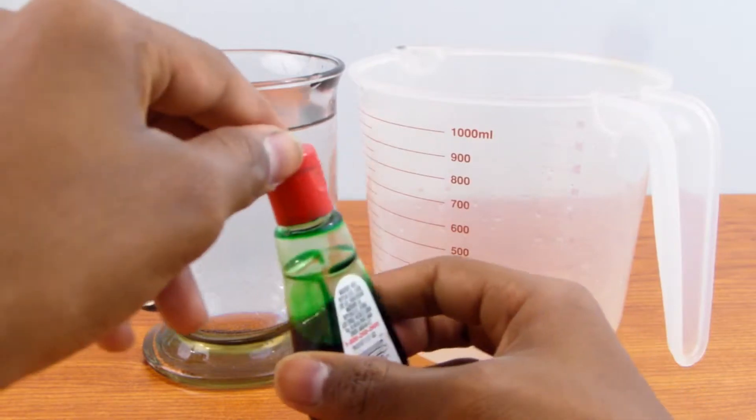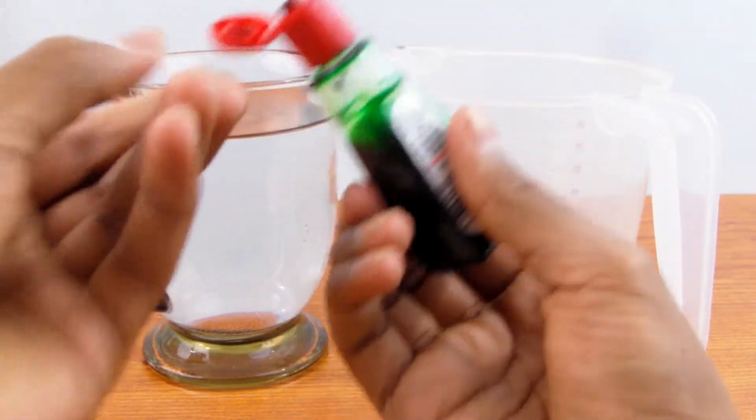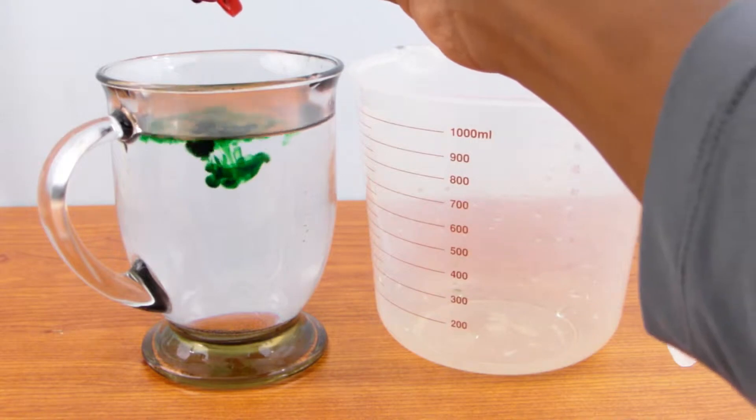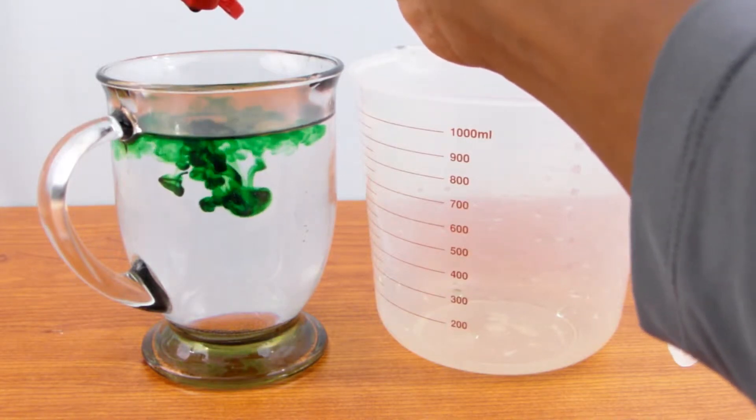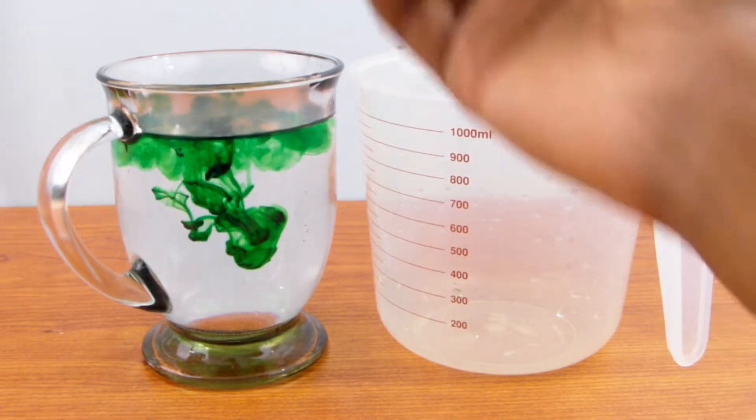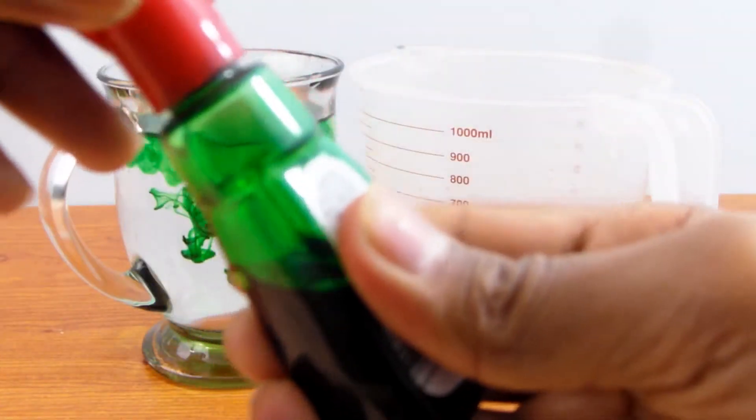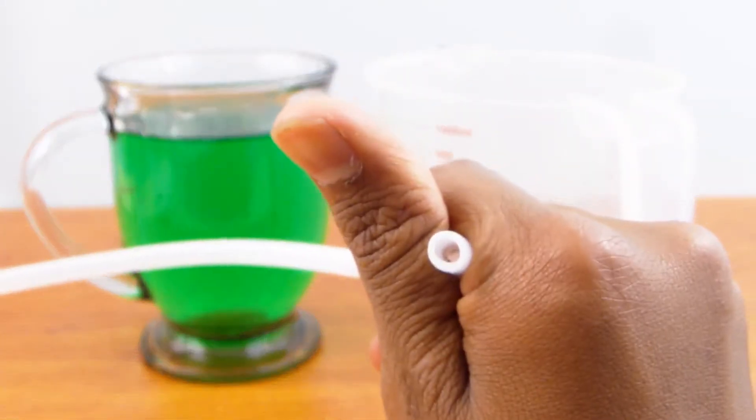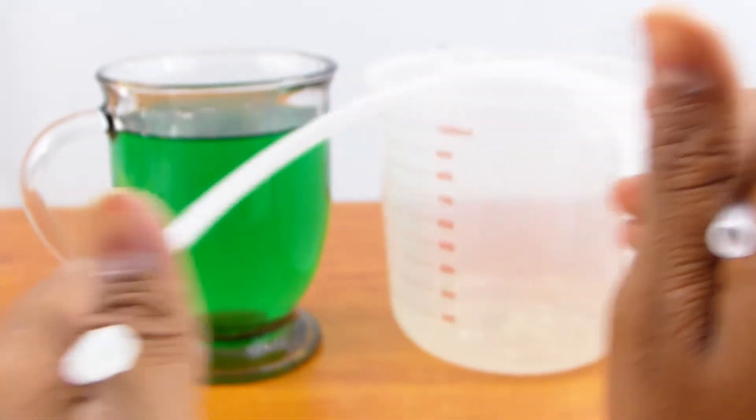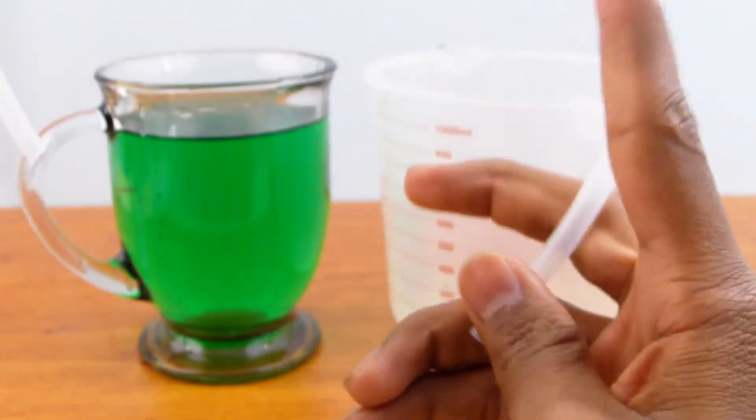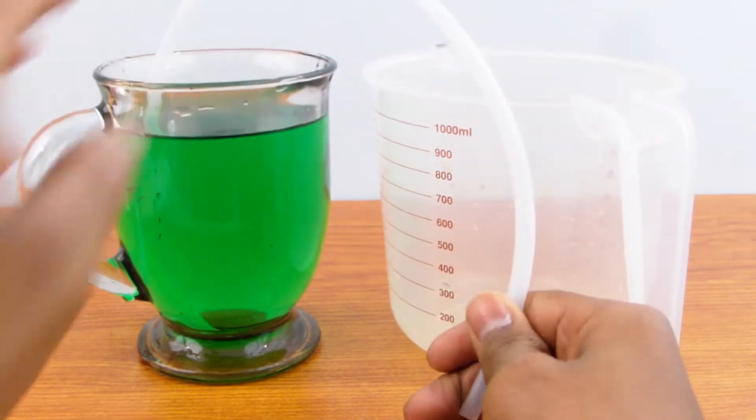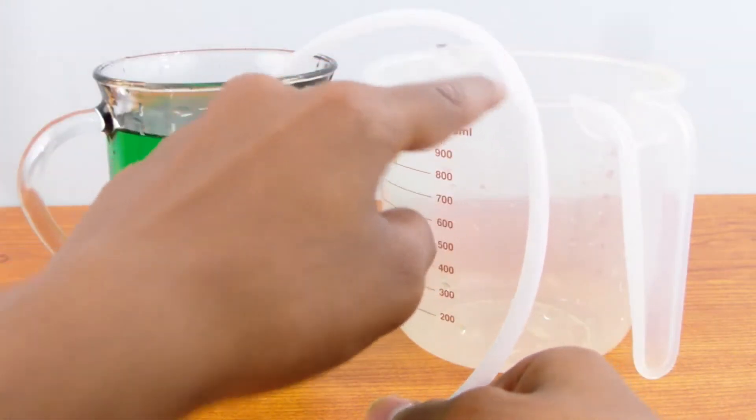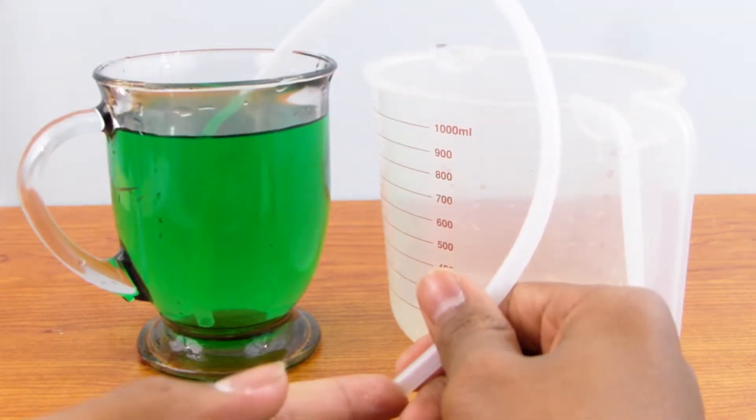Now you have to take your hollow tube or straw. As you can see, this is a hollow tube on both ends. You're going to have to put the liquid all the way to halfway through the tube, around here, and hold your thumb at the other end to stop it from going back into the cup.